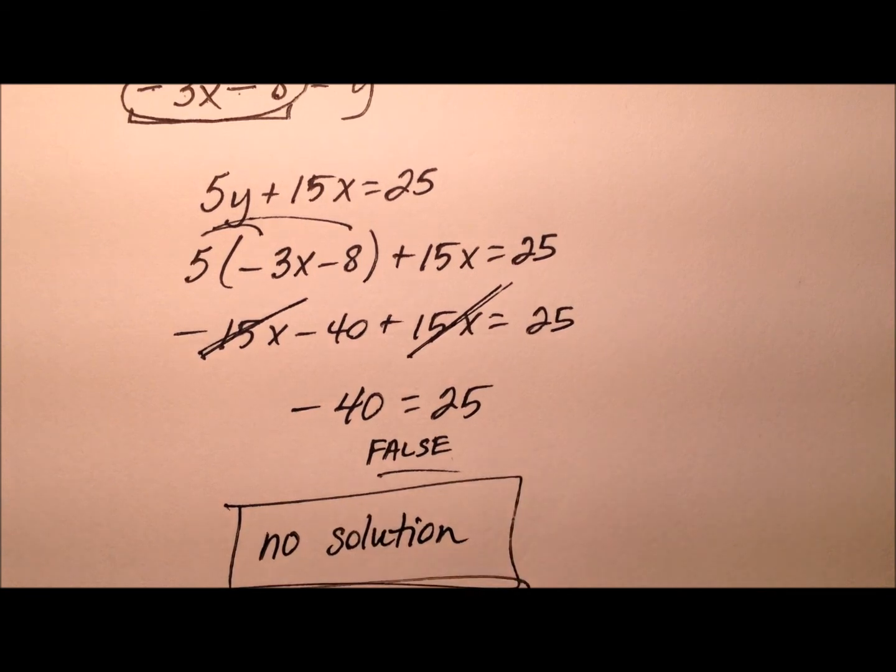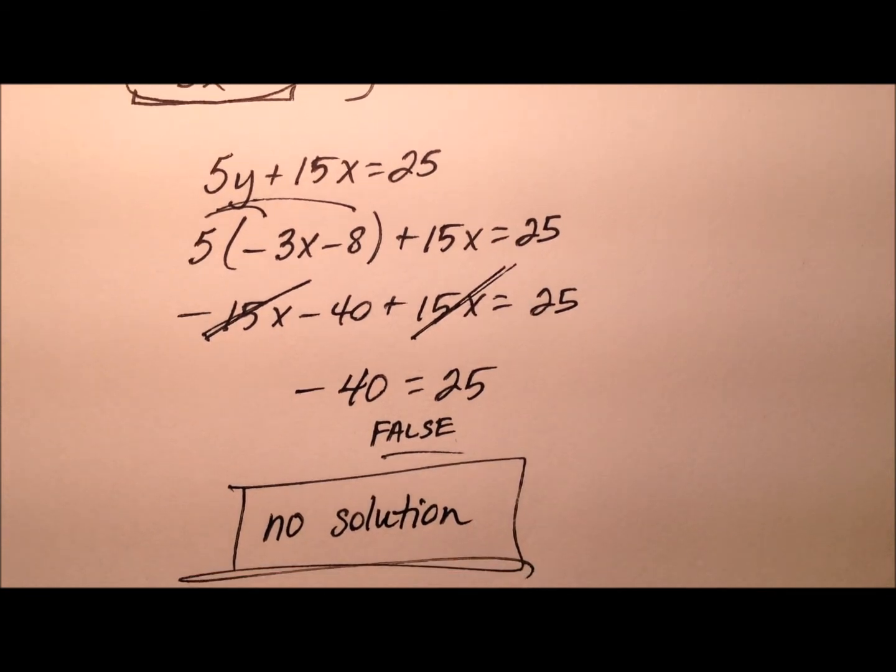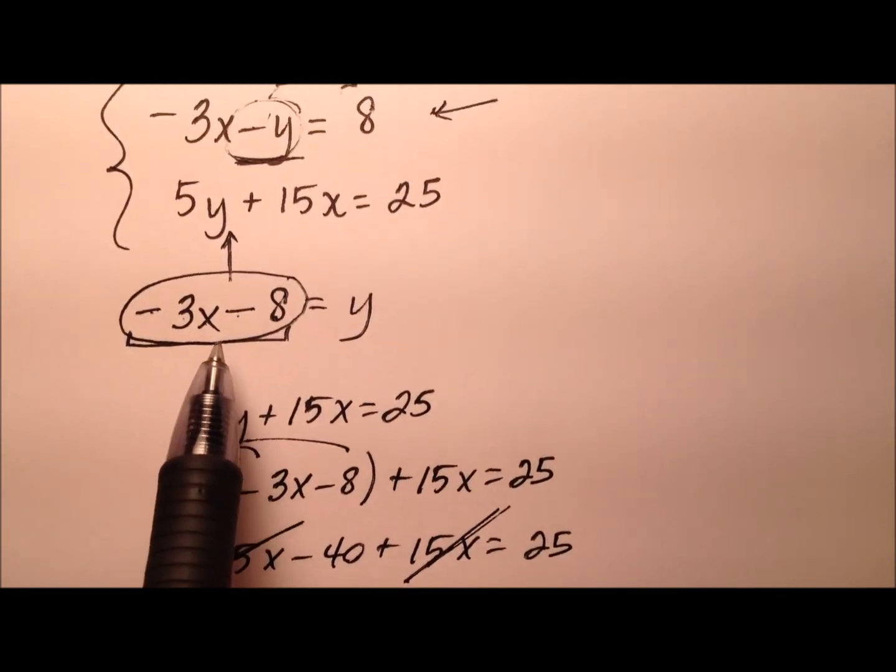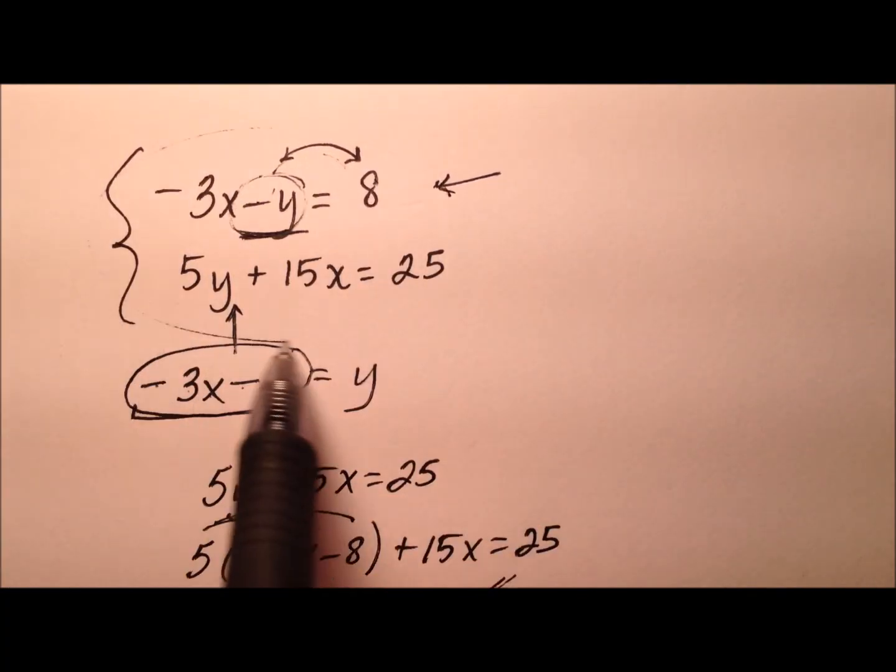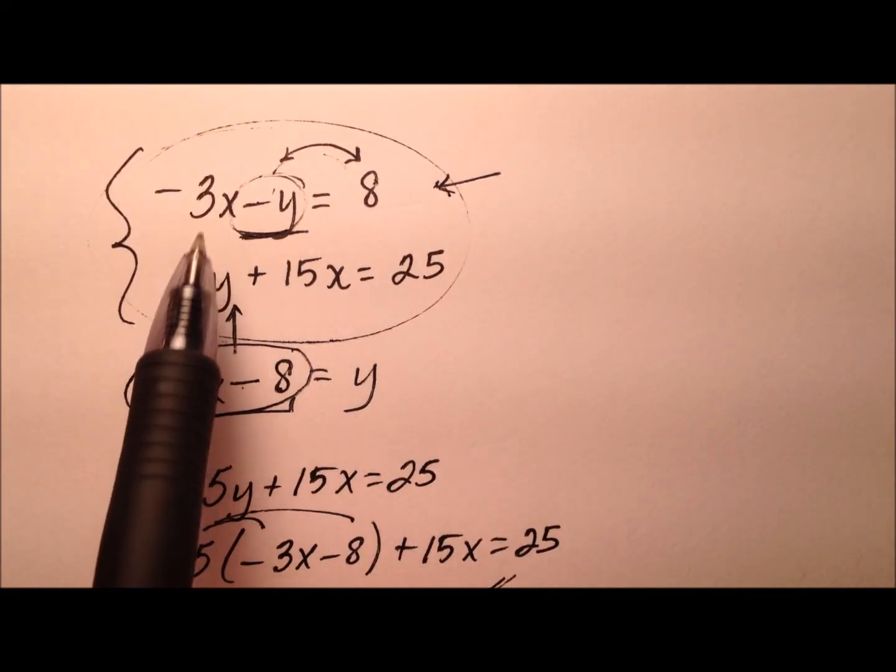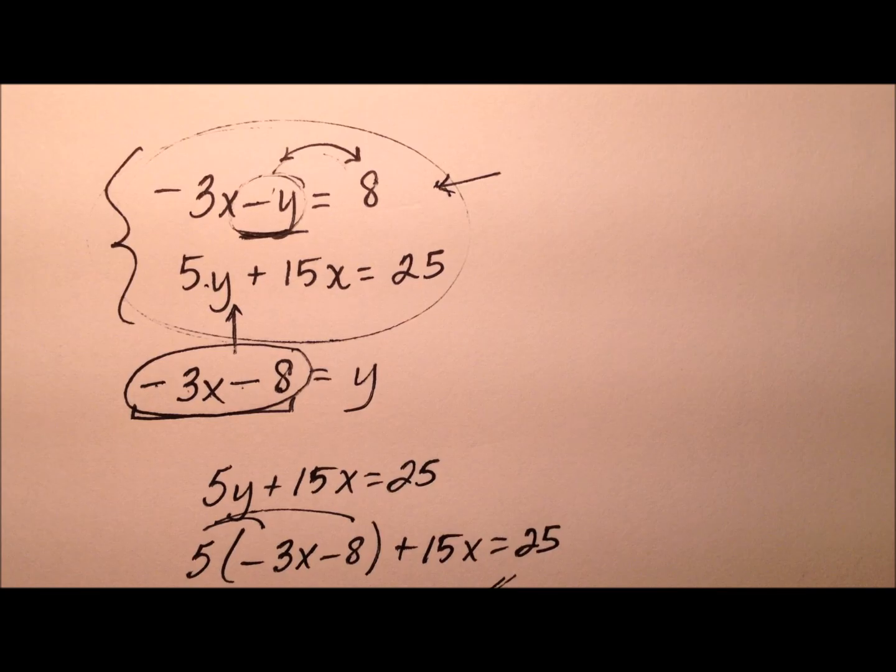And graphically, what will that look like? Well, remember, if there's no solution, it means that the lines are parallel and they never intersect. So just like the first example, I would go ahead and challenge you. Go ahead and solve for y in both of these instances. Put both lines in slope intercept form and show that these are parallel. They have the same slopes but different y intercepts.